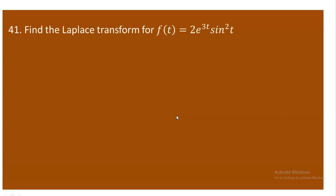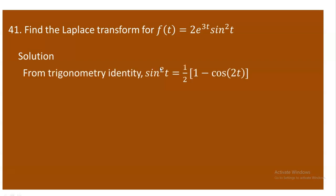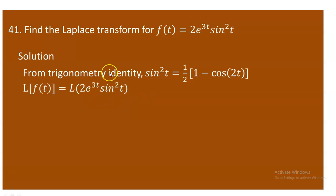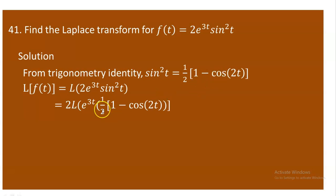The next question asks to find the Laplace transform of 2e^(3t)·sin²(t). Using the trigonometric identity sin²(t) = (1/2)(1 − cos 2t), we substitute this in. The 2 outside and the 1/2 from the identity cancel each other, leaving the Laplace transform of e^(3t)·(1 − cos 2t).